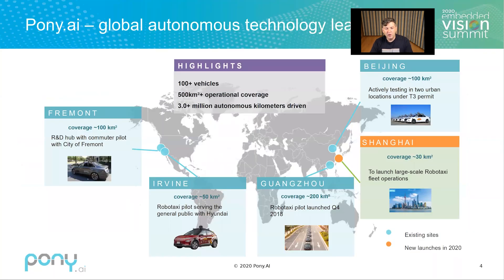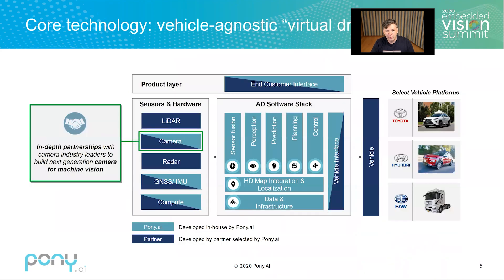Let's start with Pony. We are an international startup company. We have an office in Fremont, which is one of our headquarters, and the other one is in China. We recently partnered with Hyundai and with Toyota, launched several RoboTaxi services worldwide. You can learn more about it on our website. We develop fully our software and partner with hardware vendors to customize and make collaborations on special projects.